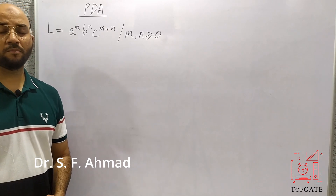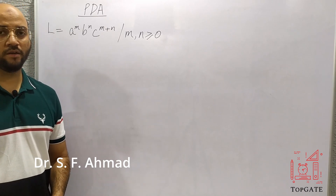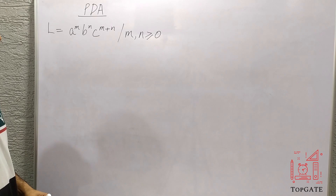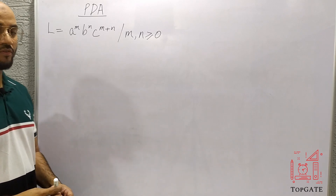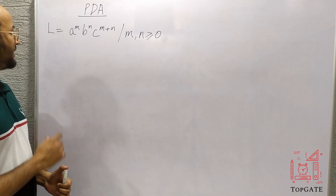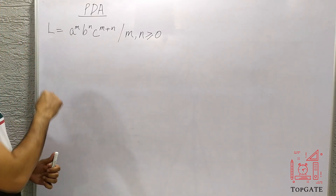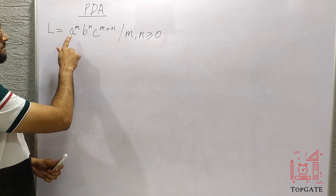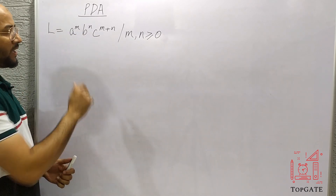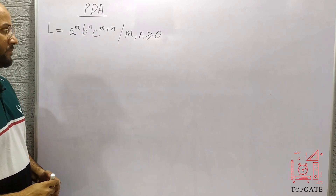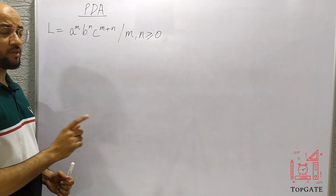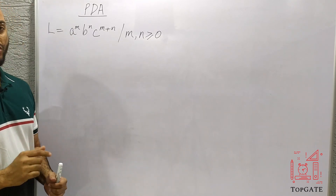Hello students, welcome to the channel TopGate. Today we will discuss one question of designing a PDA for a language L equal to a to the power m, b to the power n, c to the power m plus n, where the value of m and n is greater than or equal to zero.